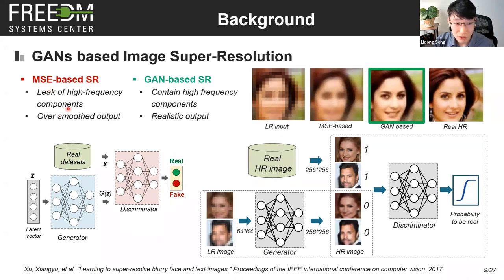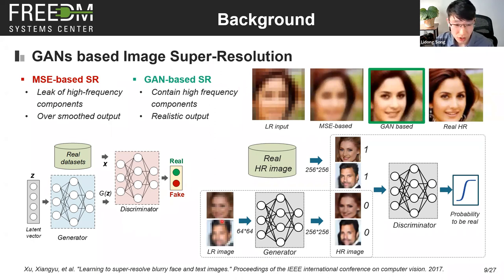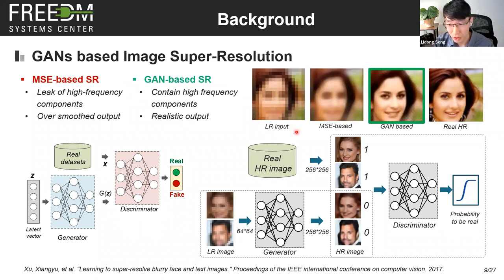Traditional super resolution is based on mean square error — it only focuses on reducing the average pixel-to-pixel mismatch. But the super resolution problem is an ill-posed problem, meaning it has infinite solutions if we only have the low resolution input. Each low resolution image may have multiple corresponding high resolution ones. With limited information, it's never possible to eliminate all mean square error and fully recover all details. The traditional approach will tend to conservatively output a general result to fit most cases, and this brings out high frequency component loss like an over-smoothed image.